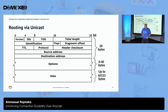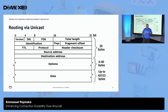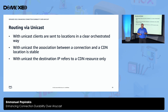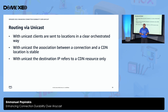A key point: everybody's familiar with the IP header — source address, destination address. Semantically these associate the client and the server. With unicast you get clearly orchestrated routing and capacity association. With unicast, the destination IP always refers to a CDN resource, not to a particular piece of content.